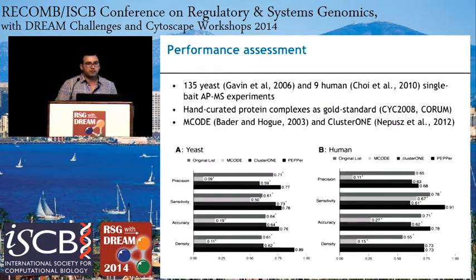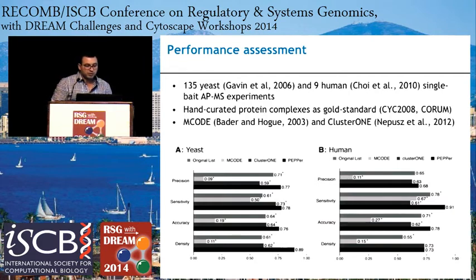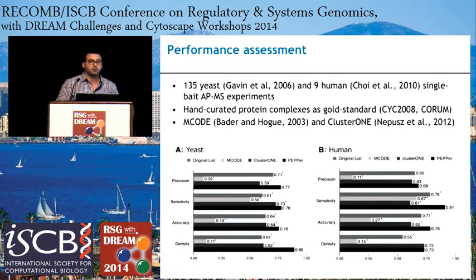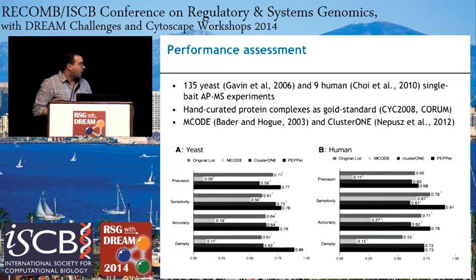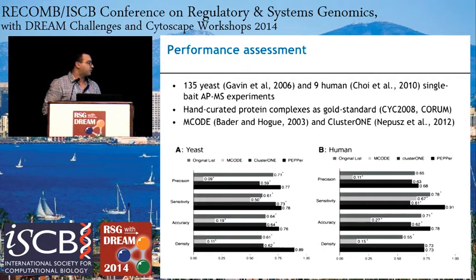We assessed the performance of PEPPER on a set of single APMS experiments from yeast and human, matched against hand-curated protein complexes as a gold standard. We compared with two popular approaches for protein complex discovery: MCODE and ClusterONE. Overall, PEPPER achieves better performance across all measures, with an average accuracy increase of 12% in yeast and 16% in human.